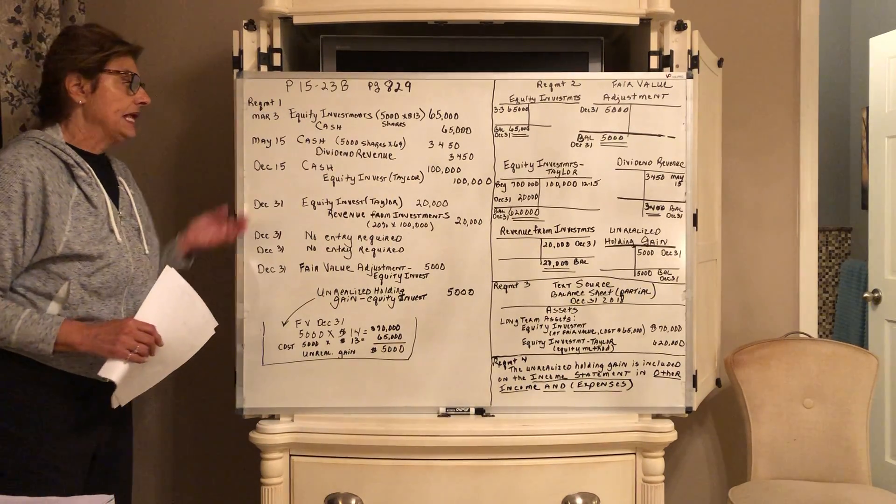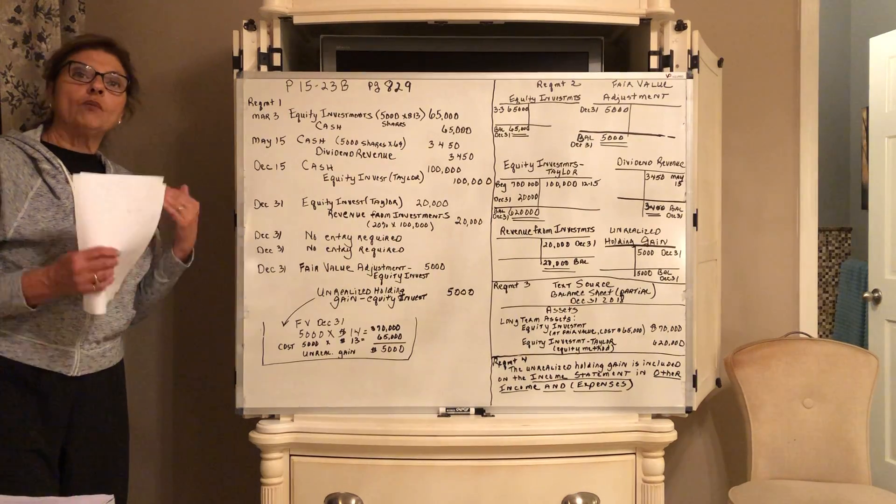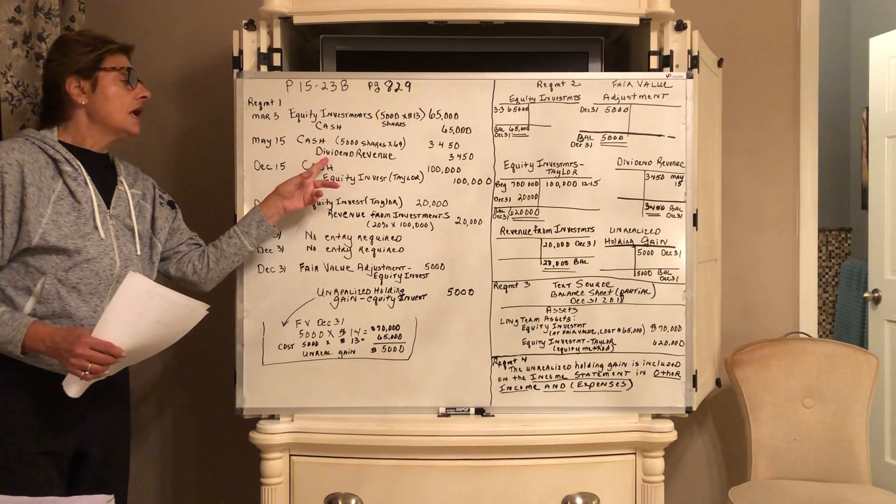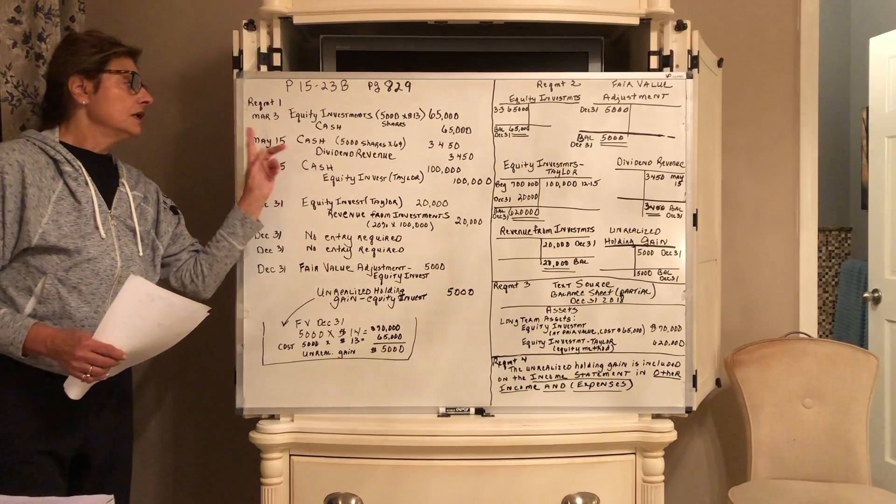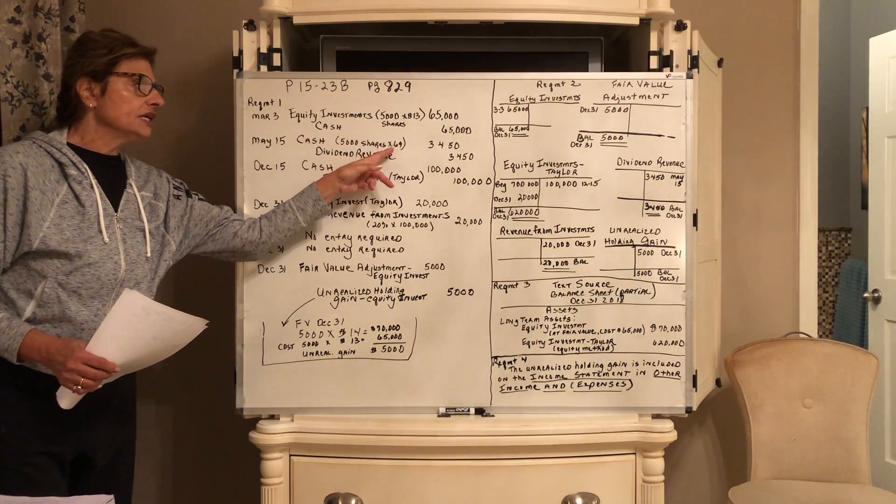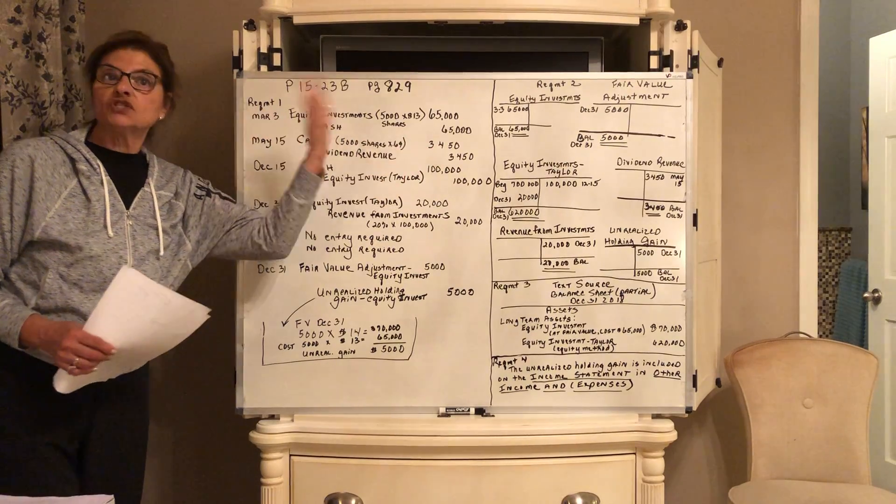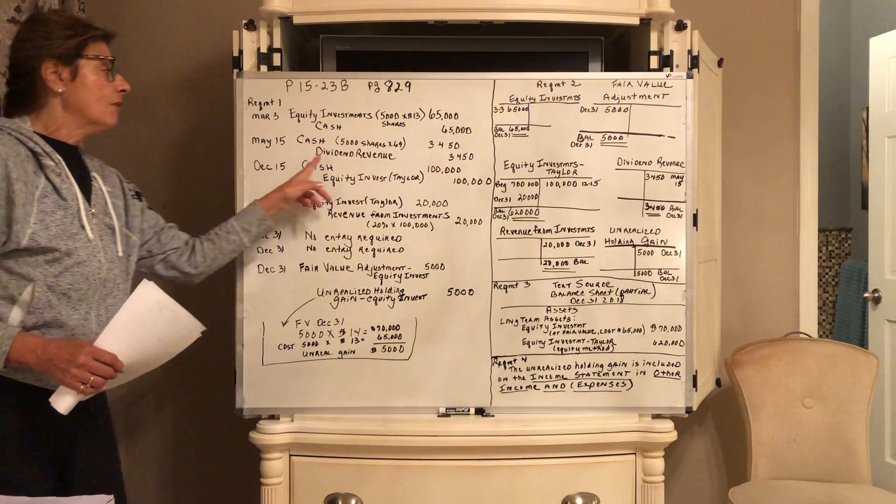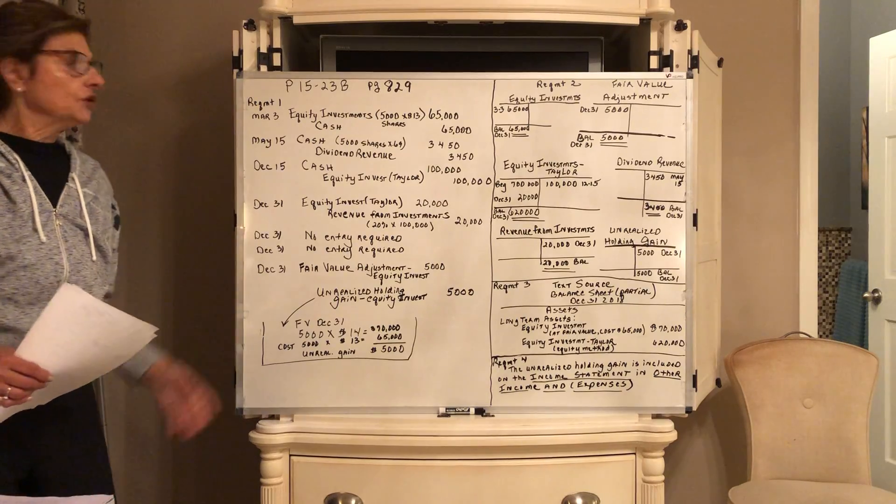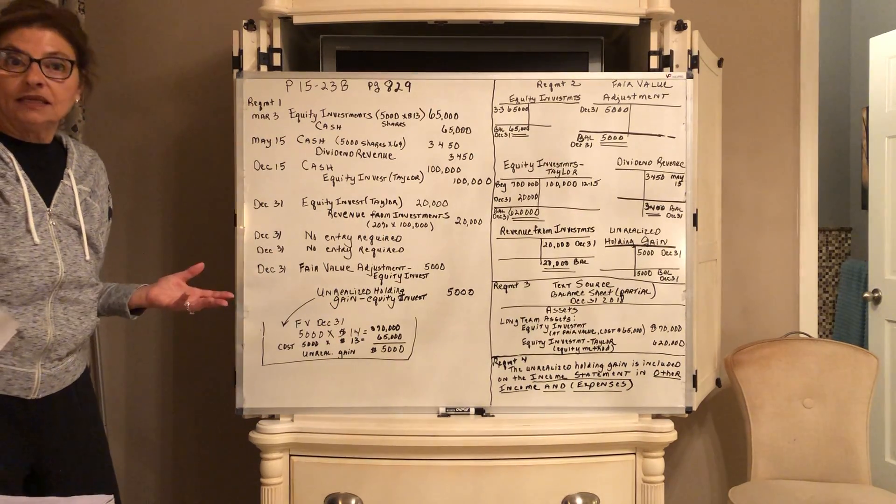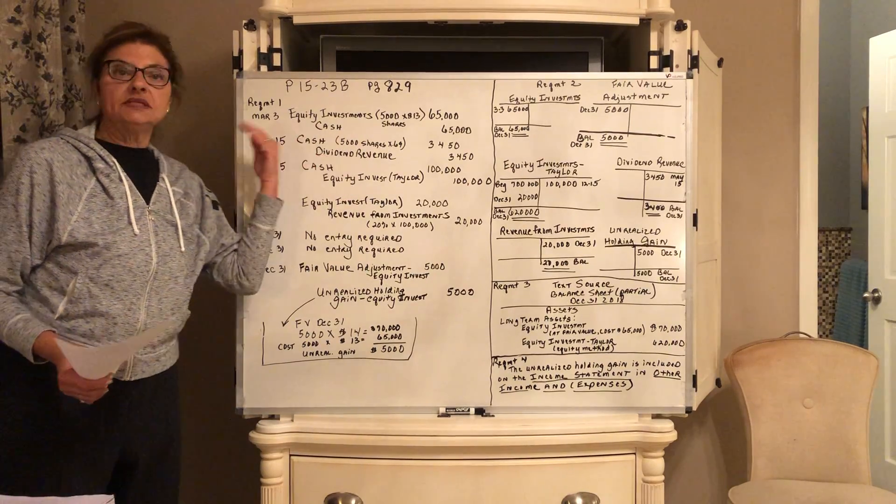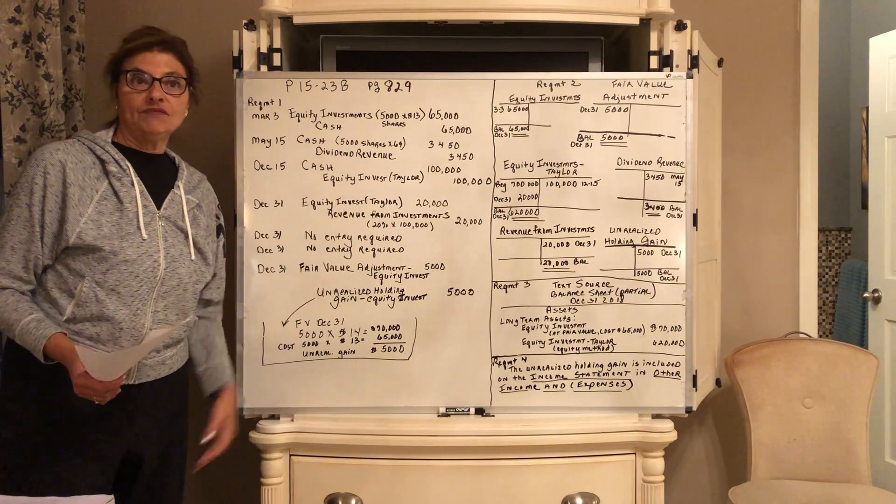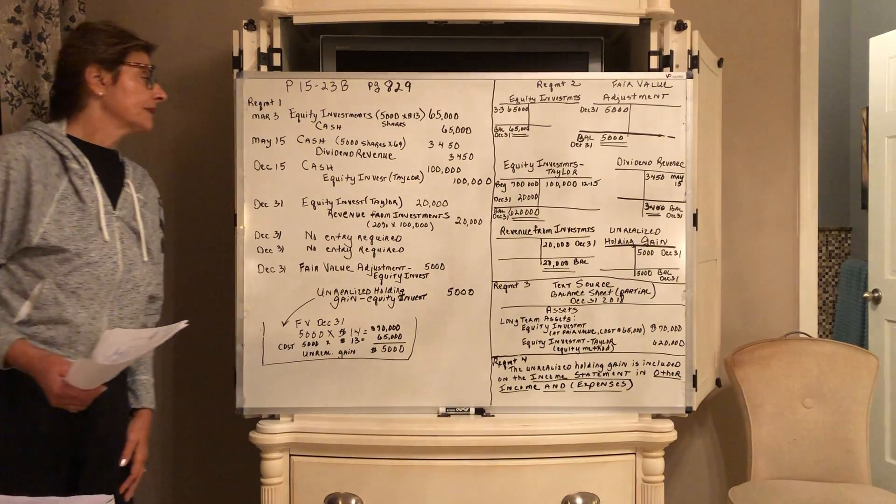Then in May, on May 15th, the company they just bought into in March paid a cash dividend of 69 cents per share. When we are not a significant player and we own less than 20%, we treat the dividends that we get from our investee as dividend revenue. We got the cash, we had 5,000 shares at 69 cents per share, so they sent us a check for $3,450. We credit dividend revenue. This is called the cost method. That's the name they give to it when you treat the dividends that are declared and paid to you as dividend revenue when you get them.